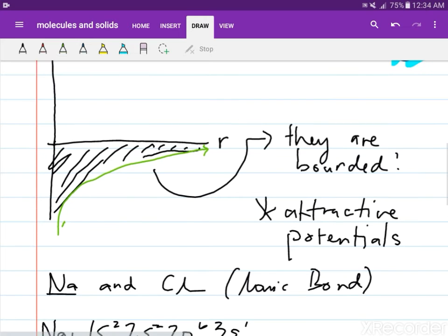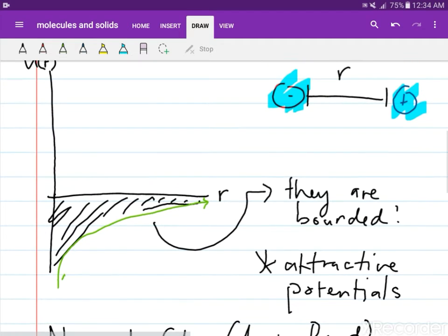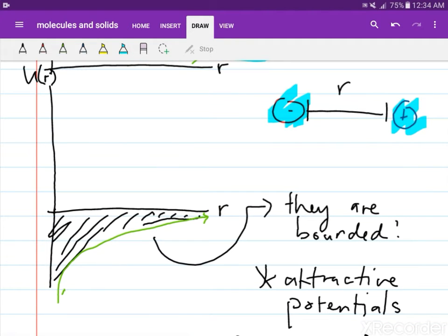In terms of the kinds of potentials we have discussed earlier, it behaves like it wants to attract an electron. So we can analyze it using attractive potentials.